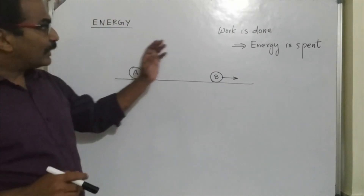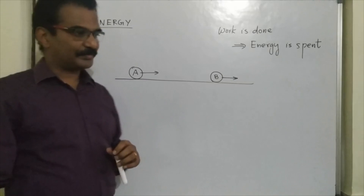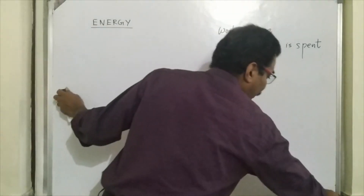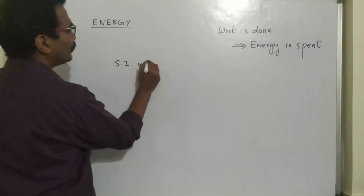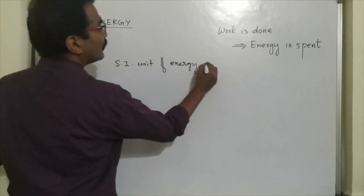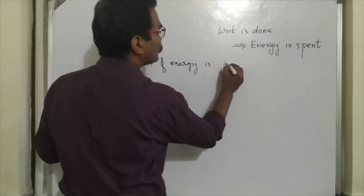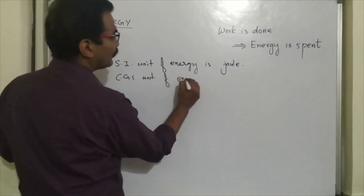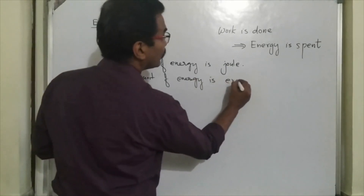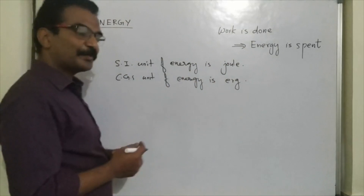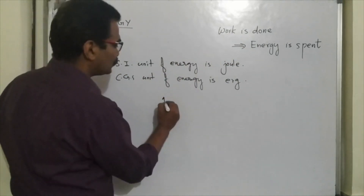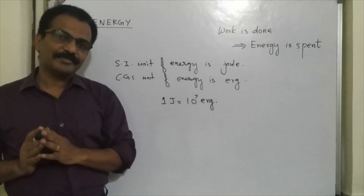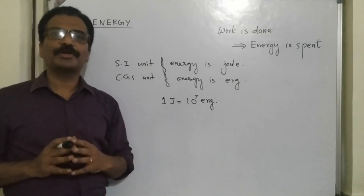So energy has the same unit as work. The SI unit of energy is the same as the SI unit of work, which is the joule. The CGS unit of energy is the erg, and 1 joule is equal to 10 to the power 7 ergs. But in this chapter, we have to learn a few more units of energy.